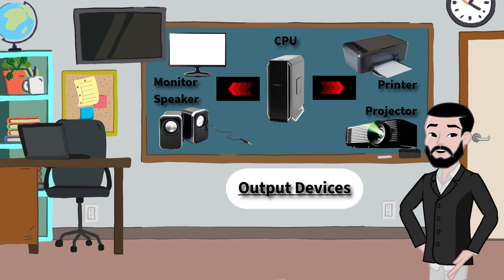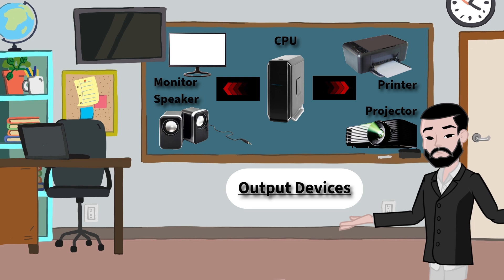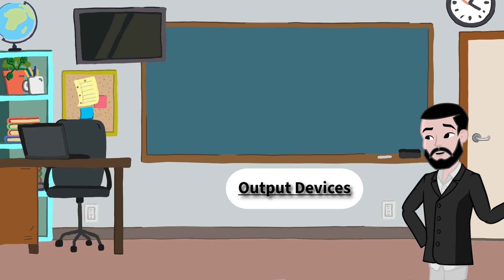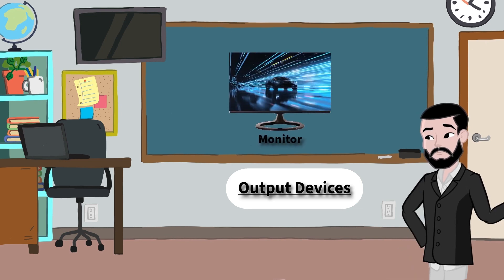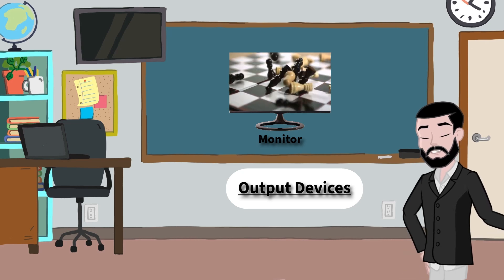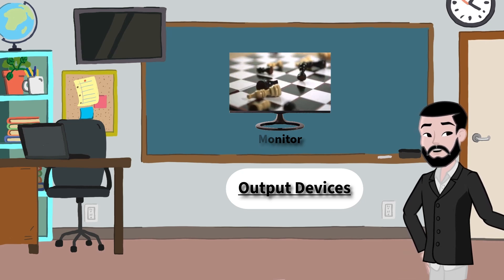Without output devices, we'd never see what the computer was doing. One of the most important output devices is the monitor, or screen. It shows you pictures, words, videos, and games. Everything you see on your computer comes through the monitor.